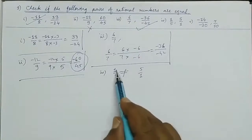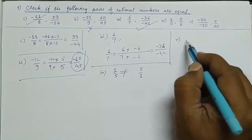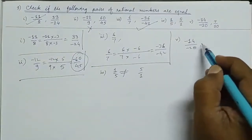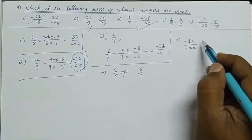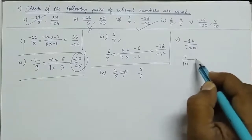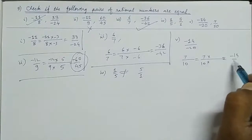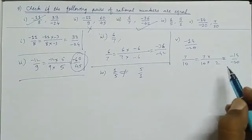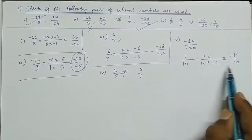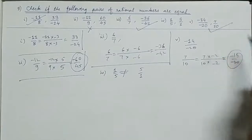Fourth: 1 upon 5 and 5 upon 1 — clearly not equivalent, since 1 upon 5 is one-fifth and 5 upon 1 is 5. Fifth: minus 14 upon minus 20 and 7 upon 10. Going in reverse: from 7 upon 10, multiply by minus 2 — 10 twos are 20 making minus 20, and plus into minus gives minus 2, so numerator 7 into minus 2 gives minus 14. So these are equivalent.